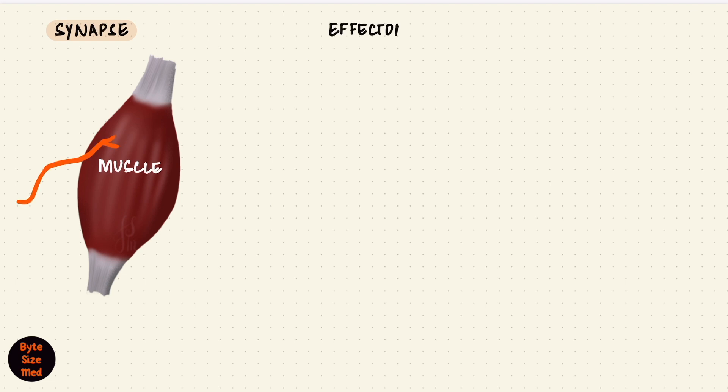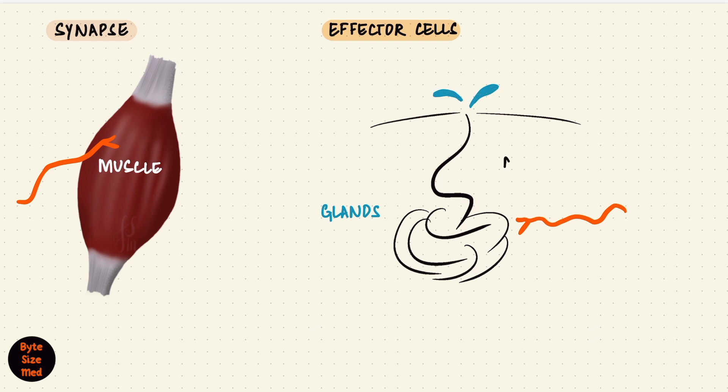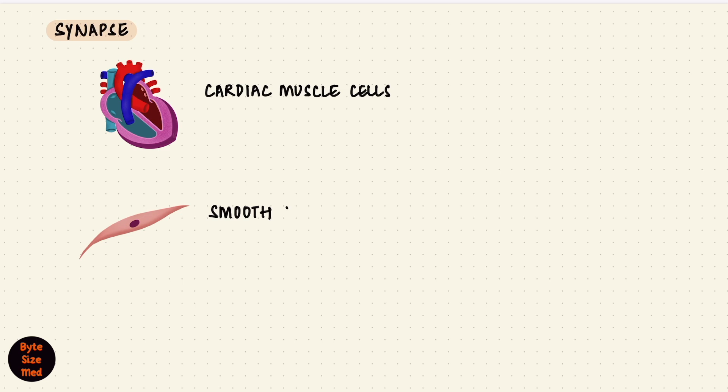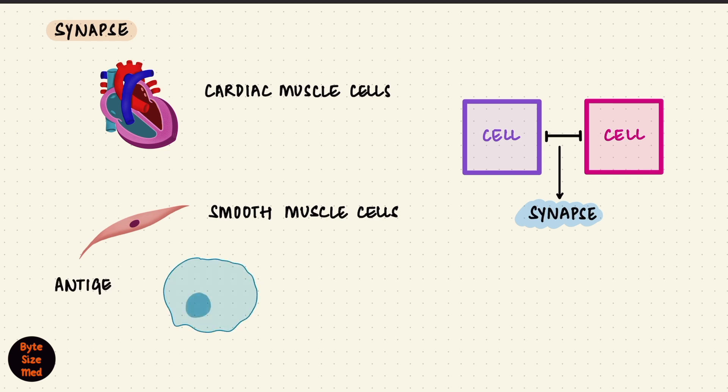Muscles aren't the only organs with effector cells in the body. There are also glands. Neurons can stimulate glands to increase secretion. That communication happens in a neuroglandular synapse. In some synapses, neurons aren't involved at all. Neurons aren't the only excitable cells. Muscles are also excitable. Cardiac muscle cells, some smooth muscle cells, are excitable and also have synapses, allowing them to communicate with each other. Even immunological cells form synapses, like between antigen-presenting cells and T-lymphocytes. These are called immunological synapses, and we'll deal with those in immunology.